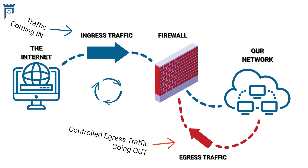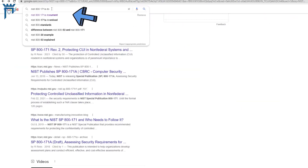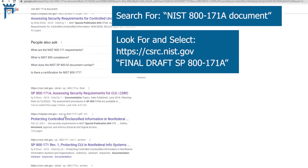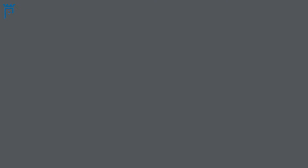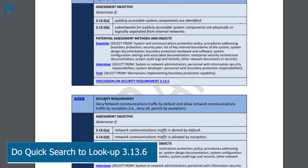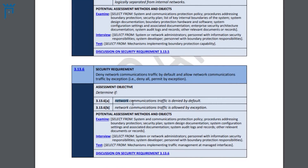When we're assessing this control, let's go look at NIST 800-171A. In this document, we can do a quick search for the control we're looking at. We see that to meet this control we have to do two things: we have to make sure that network communications traffic is denied by default, and we need to make sure that communications traffic is allowed by exception.